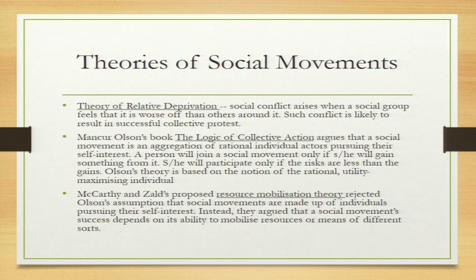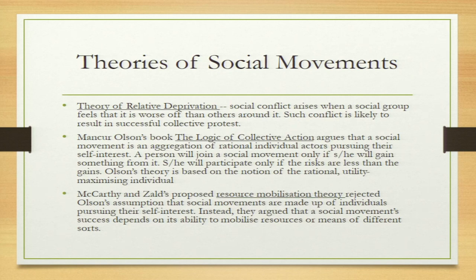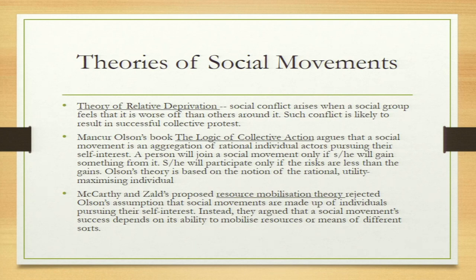Now we move on to theories of social movements, based on western scholars. The first is the theory of relative deprivation — it argues that since some groups feel deprived, they feel they are not getting their due, and that is why the social group starts some kind of protest. Social conflict arises when a social group feels that it is worse off than others around it, and this conflict is likely to result in collective protest.